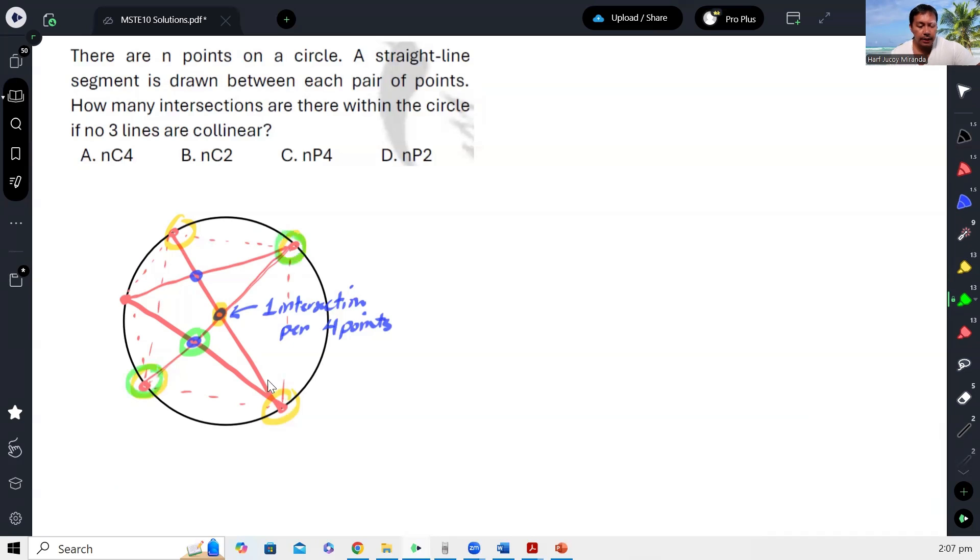And itong intersection na to is nabuo netong points na to—itong dalawa tapos itong dalawa, okay? So ibig sabihin, as long as we have four points, we can produce one intersection.